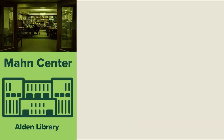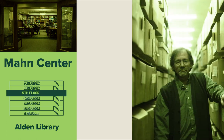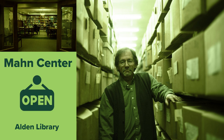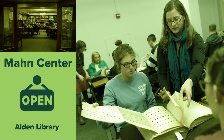The Mon Center for Archives and Special Collections on the fifth floor of Alden Library is home to thousands of primary source materials. During business hours, anyone can visit the Mon Center Reading Room to examine these sources up close and in person.